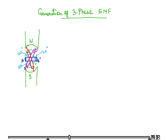Here the figure is made. This is the magnetic field, north pole, south pole, and these are the three windings: A-A', B-B', and C-C'.